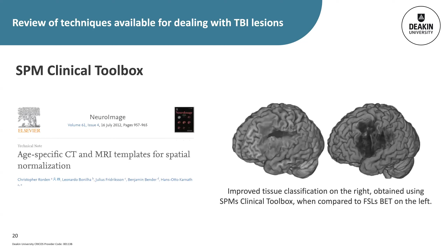SPM's clinical toolbox employs a different approach, utilising the unified segmentation method proposed by Ashburner and Friston in 2005. This method is based on the understanding that normalisation and segmentation exist in a virtuous cycle — improved normalisation leads to improved segmentation, which in turn improves normalisation. The unified method combines normalisation, segmentation, and bias correction into a single generative model, using a priori maps of grey matter, white matter, and CSF from a healthy adult population. Although the clinical toolbox does not require a lesion mask input, including one has been shown to improve accuracy, and its templates are designed to be symmetrical, optimised for unilaterally lesioned patients.